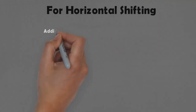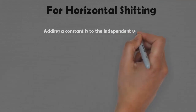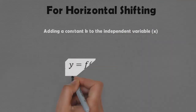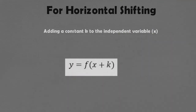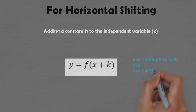Similarly, for horizontal shifting, adding a constant k to the independent variable x, that is y = f(x + k): if k is greater than 0, the graph shifts by k units to the left, and if k is negative, the graph shifts to the right by k units.